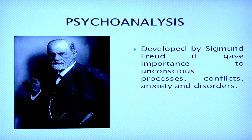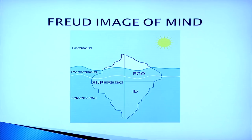Psychoanalysis is one of the very famous schools of thought of psychology. It was developed by Sigmund Freud and gave importance to unconscious processes, conflicts and disorders. Through his image of the mind, Freud tried to explain that our mind consists of three parts: the conscious part, the subconscious part, and the unconscious part. According to Freud, 80% of the mind is unconscious. Whatever we do is because of those unconscious desires — unconscious means we are not aware of those desires consciously — and whatever we do is related to those unconscious desires in the mind.